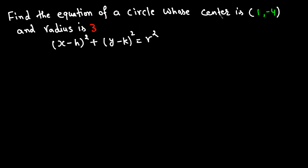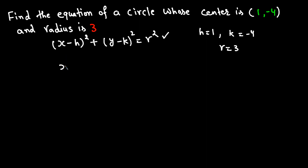The center is (1, −4), which means H is 1 and K is negative 4. The radius is 3, so R is 3. I'm going to plug in those values of H, K, and R into the standard equation.